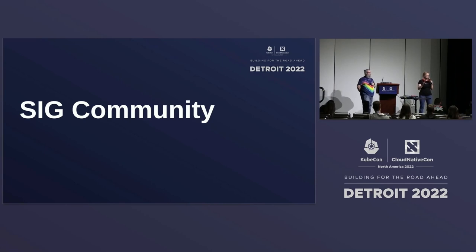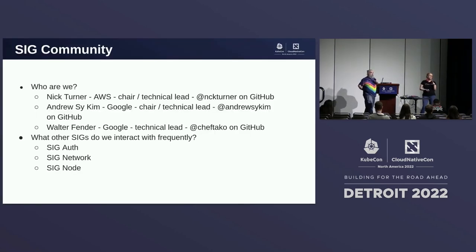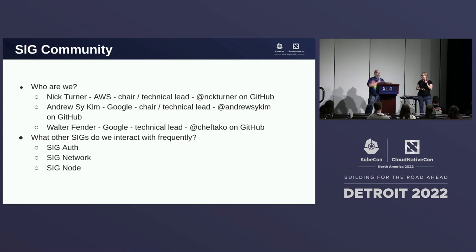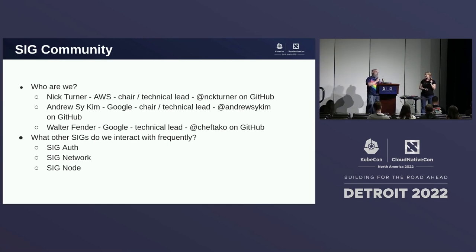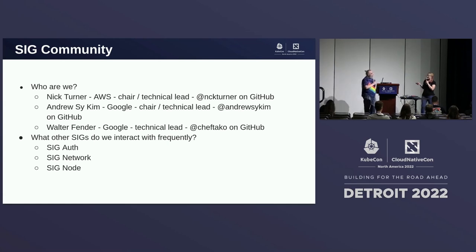Next, we're going to talk a little bit about SIG community — or more specifically, about you, because you're here because you want to know where you fit in. In terms of who the SIG chairs are: Nick Turner from AWS is a co-chair and technical lead; Andrew Sy Kim from Google is also a co-chair and technical lead; and Walter Fender from Google is a technical lead and emeritus chair — Chef Taco on GitHub and Slack. While they are not able to be here at the conference today, they're very active and present in the community.